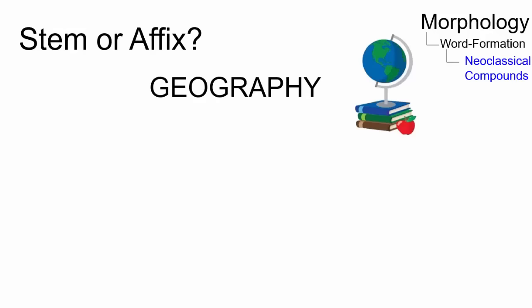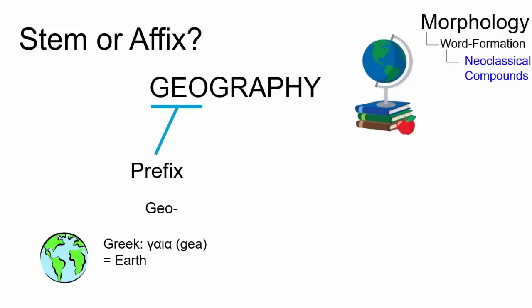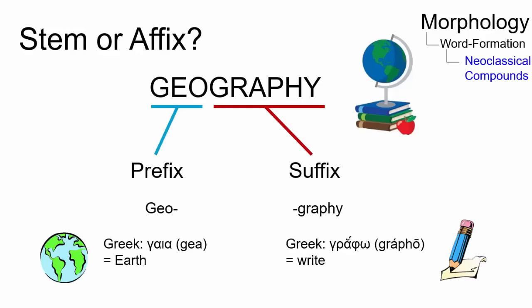In geography, the first recorded neoclassical compound used in English, the two neoclassical elements are geo and graphi, but neither of them can be used independently since they are both affixes.